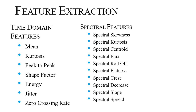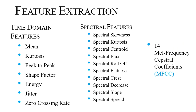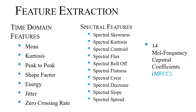The spectral features include spectral skewness, kurtosis, centroid, flux, rolloff, flatness, crest, decrease, slope, and spectral spread. Additionally, mel-frequency cepstral coefficients were also extracted, making a total feature vector of 31 features.